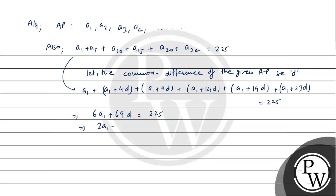3 common lenge, to 2A1 plus 23D is equal to 225 upon 3. 225 divided by 3 equals 75. Toh yahan se 2A1 plus 23D ki value aaye hai 75. Isko hum equation 1 maante hain.